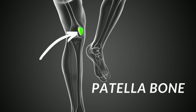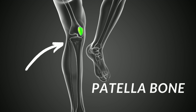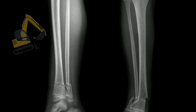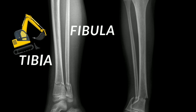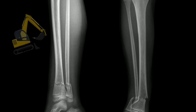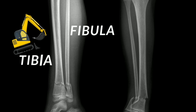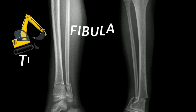Next we find our patella bone, which is also called our kneecap. Then we have the two bones of the lower leg: one is called the tibia, and it carries a ton of the weight — T for ton, T for tibia. Then we have the smaller bone in the leg, which is called the fibula.